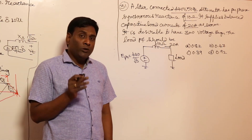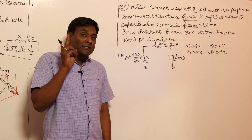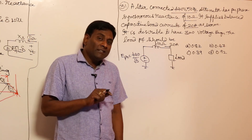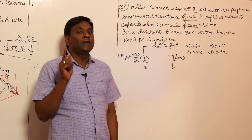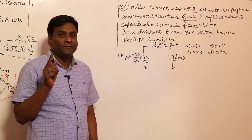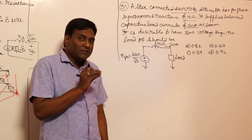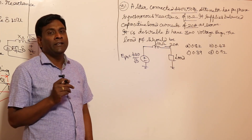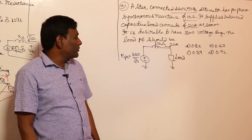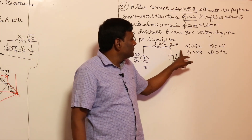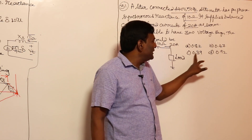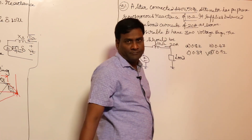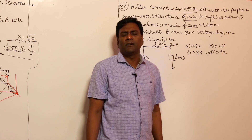We know that maximum voltage regulation occurs near zero power factor, and zero voltage regulation occurs near unity power factor. So zero voltage regulation will occur at unity leading power factor. Out of the options, whichever is nearer to unity — 0.92 — will be the answer. You need not solve it, but let us try anyway.